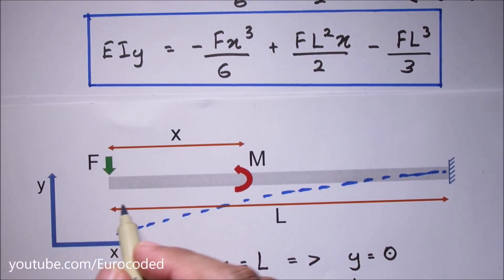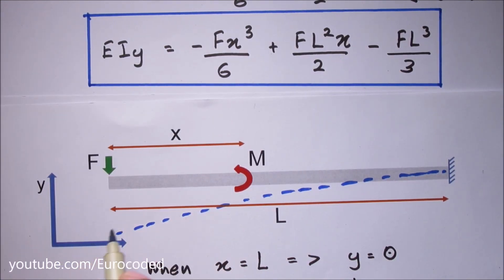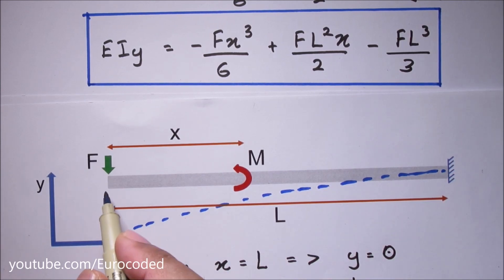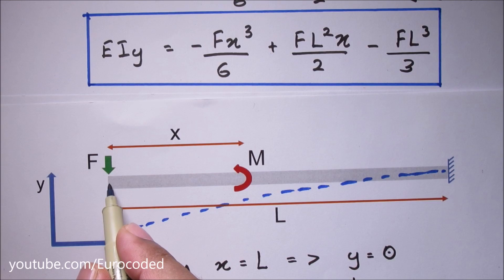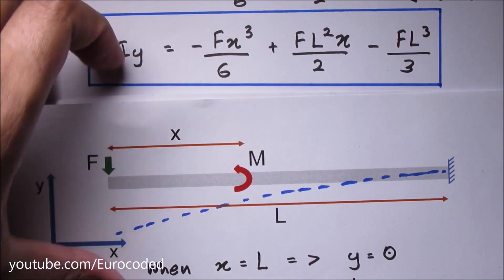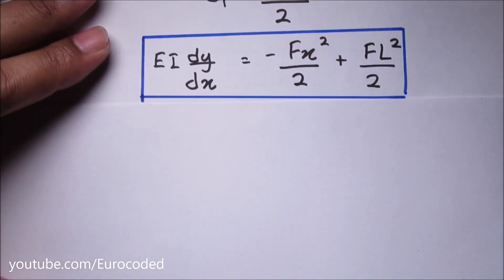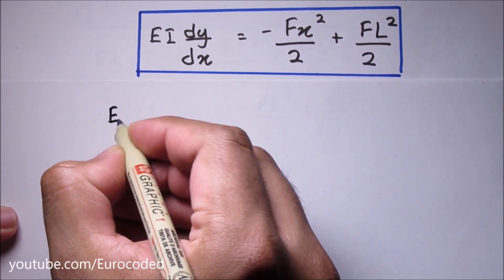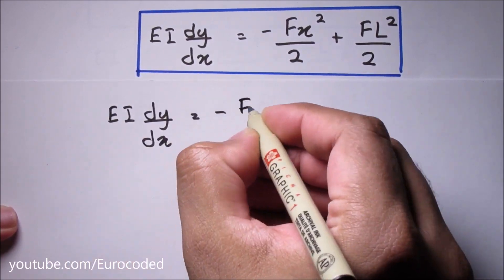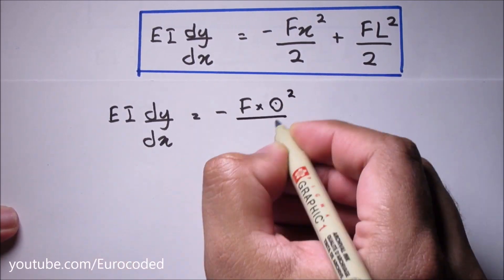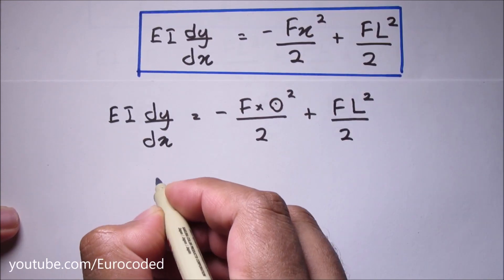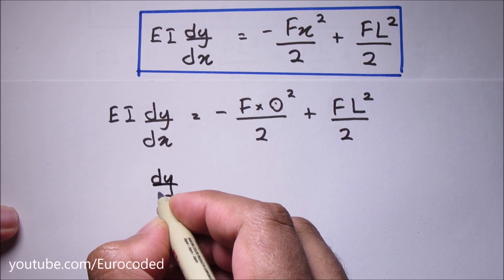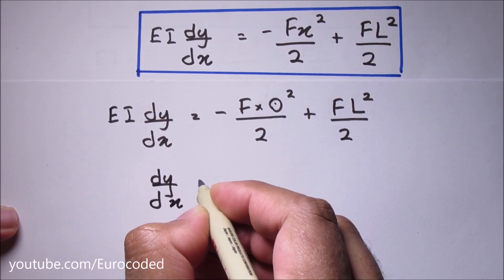Now let's calculate the slope and deflection at the free end of our cantilever beam where x is equal to 0. Using the slope equation we can write the slope at the free end.